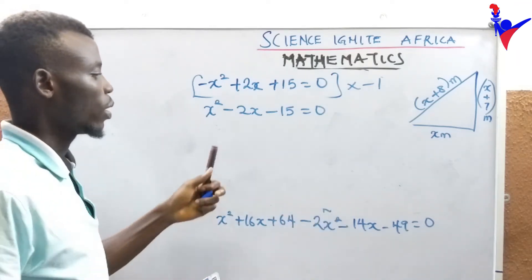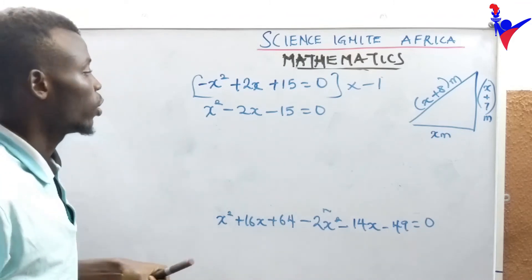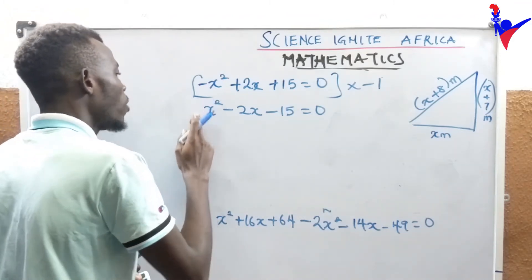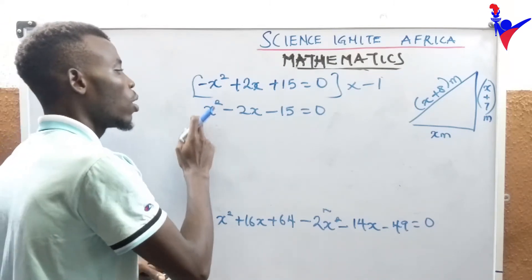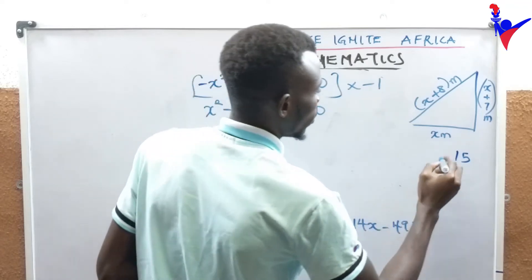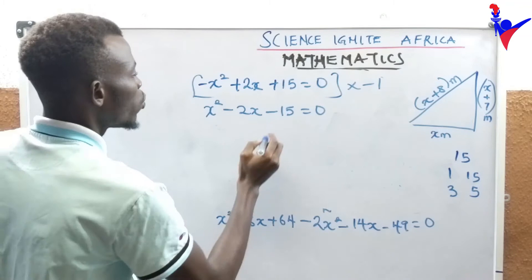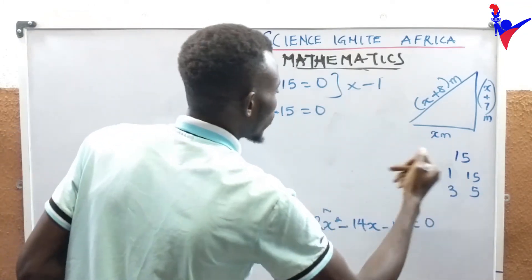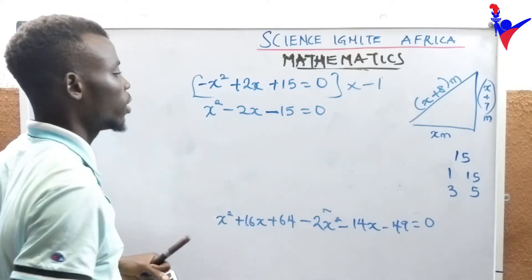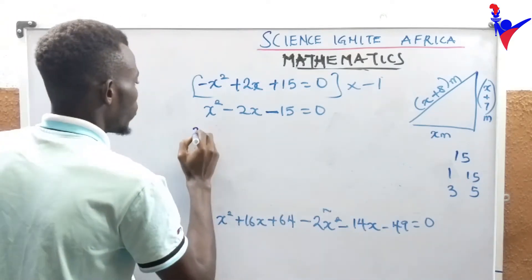Now we're having a quadratic equation. The coefficient of x squared is 1 times 15, that's 15. Give me a factor of 15: we have 1 and 15, we have 3 and 5. How do we input 3 and 5 when we multiply together to give us minus 15 and when we add to give us minus 2?